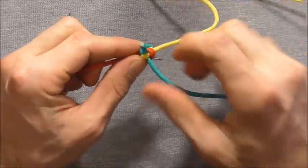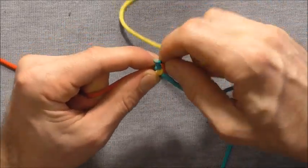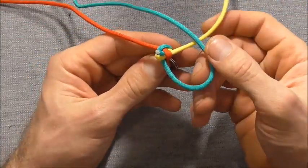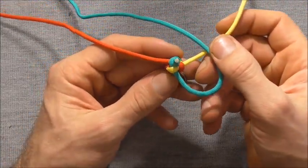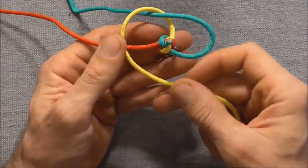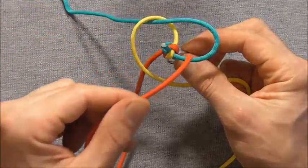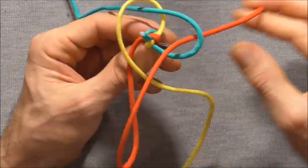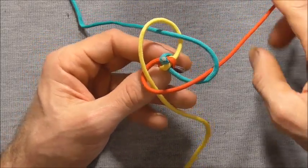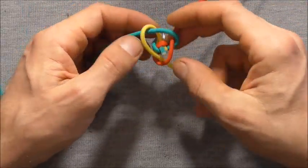And we just are going to repeat that process until we get the keychain to the desired length. So we will take one strand over, the next strand over, and then the last strand through the original loop. And tighten it up by pulling all three strands.